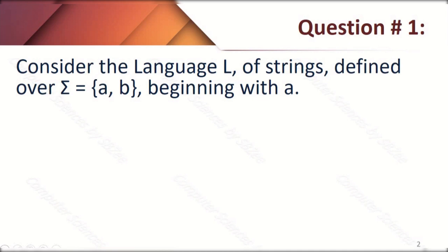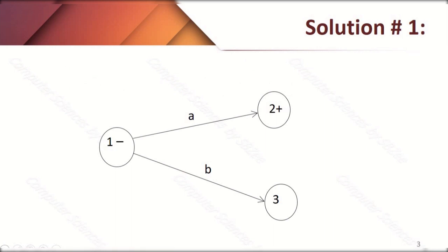The condition imposed is that the string must start with letter 'a' — at the start, letter 'b' is not allowed. We send a 'b' transition towards the dead state and an 'a' transition to the final state. From the final state, both 'a' and 'b' are accepted, so we add a self-loop at state 2. To make this FA deterministic, state 3 (dead state) gets a loop for both 'a' and 'b'. This is the complete DFA for question one.